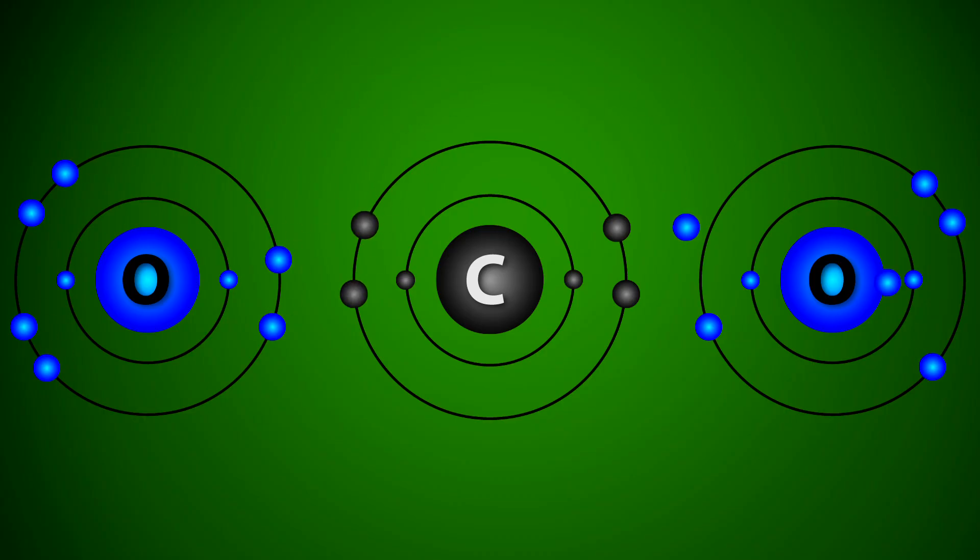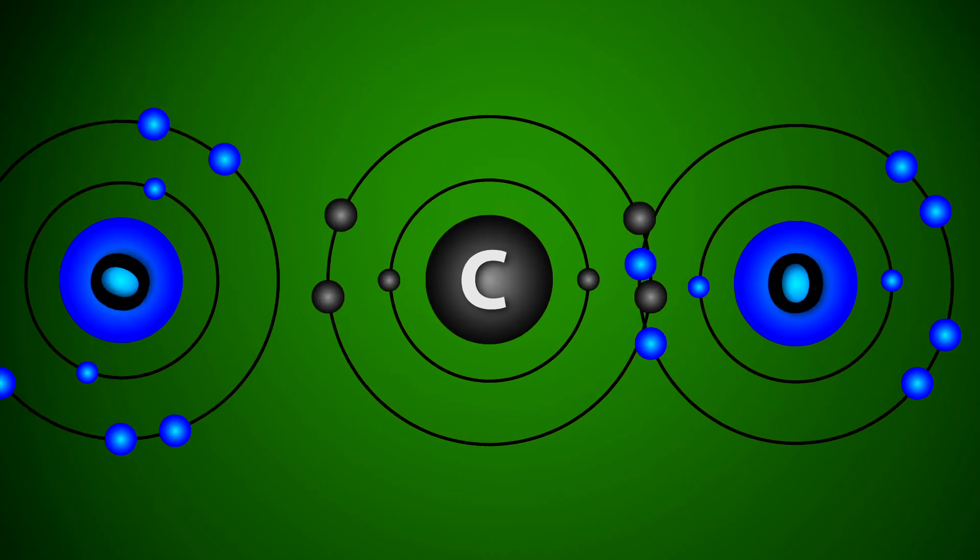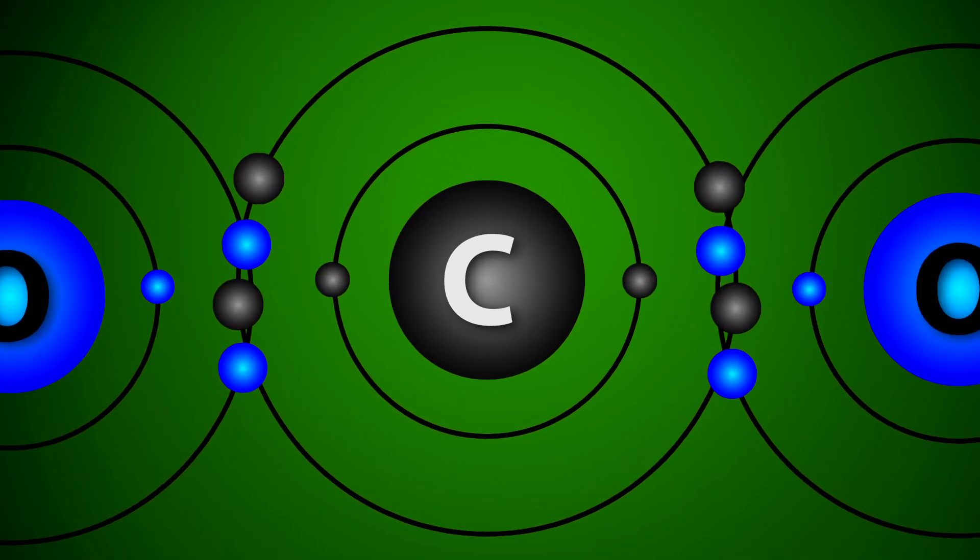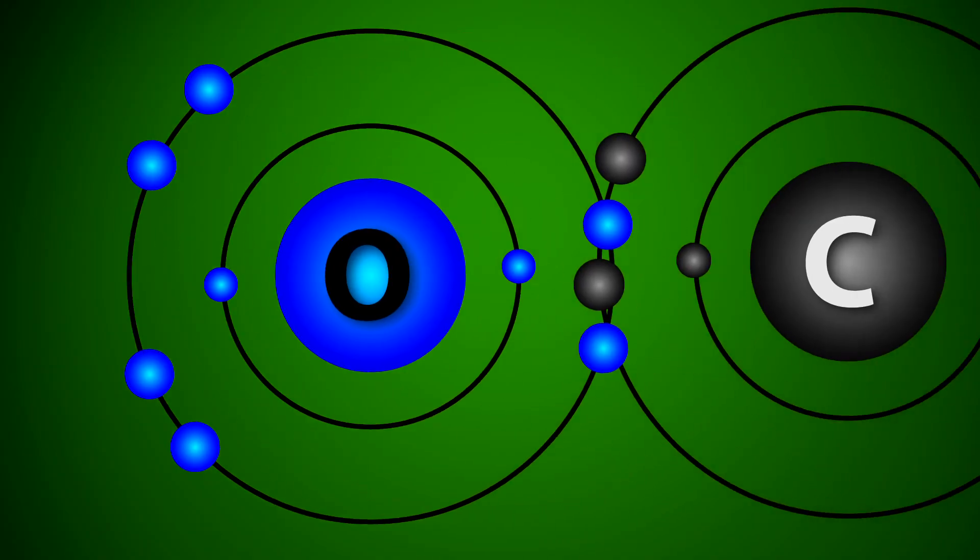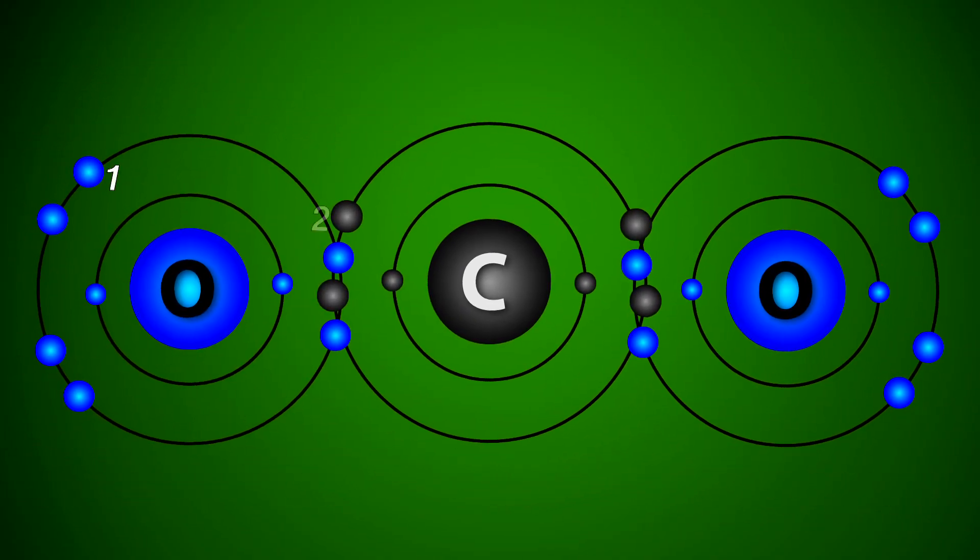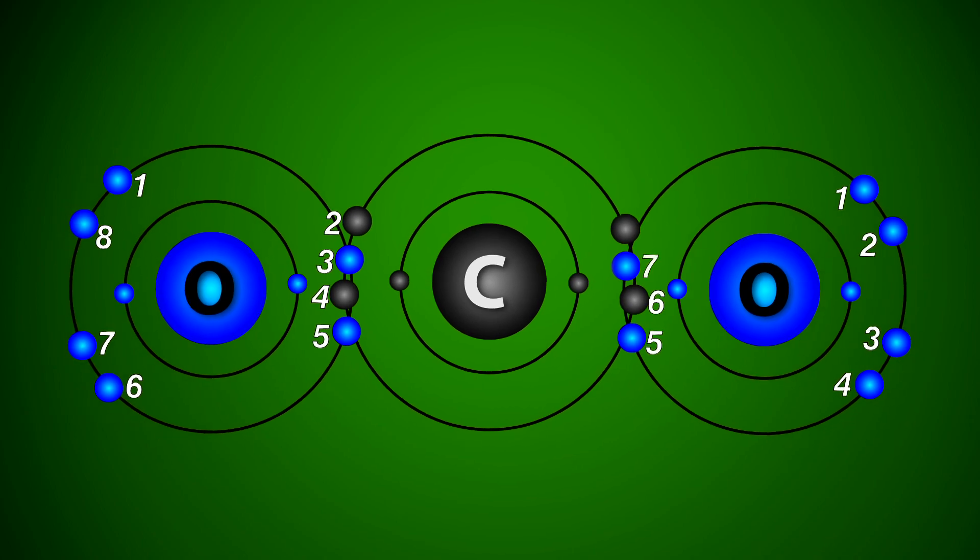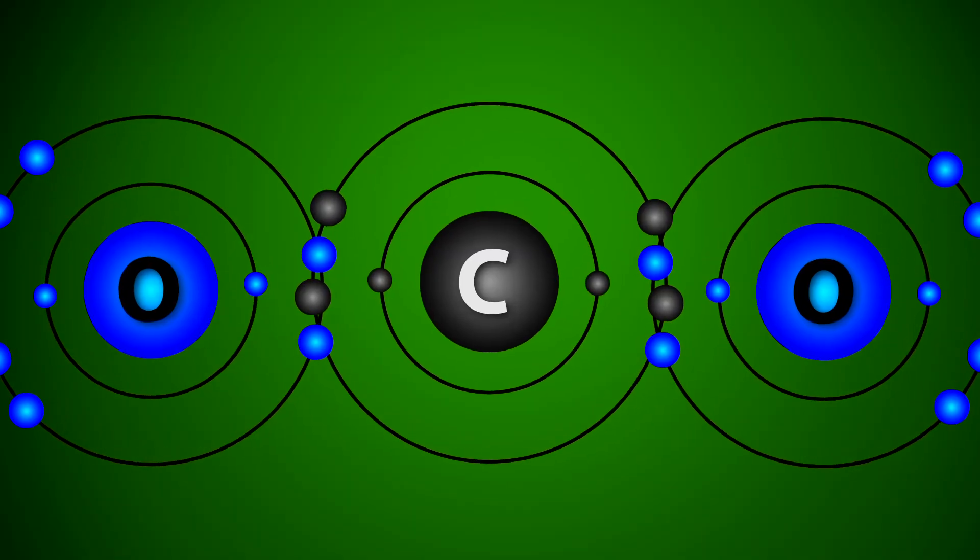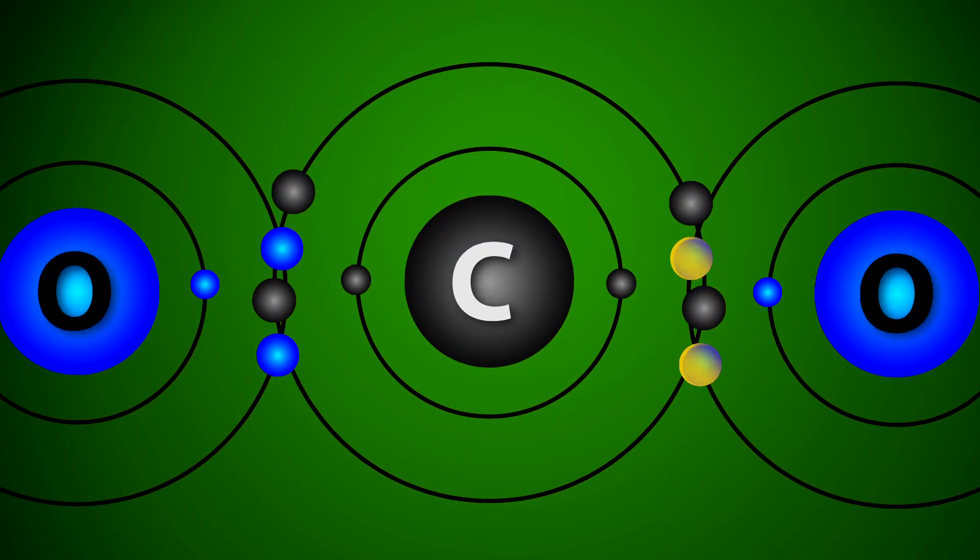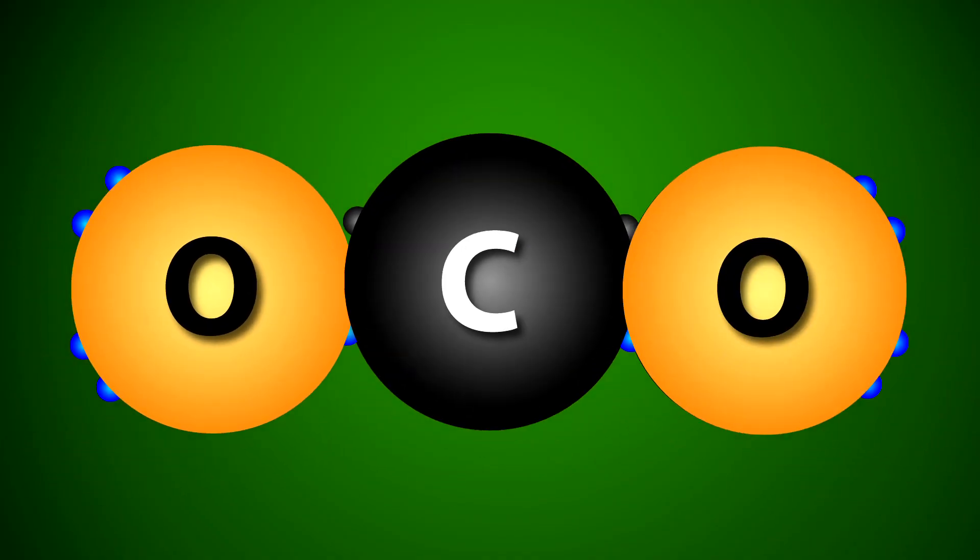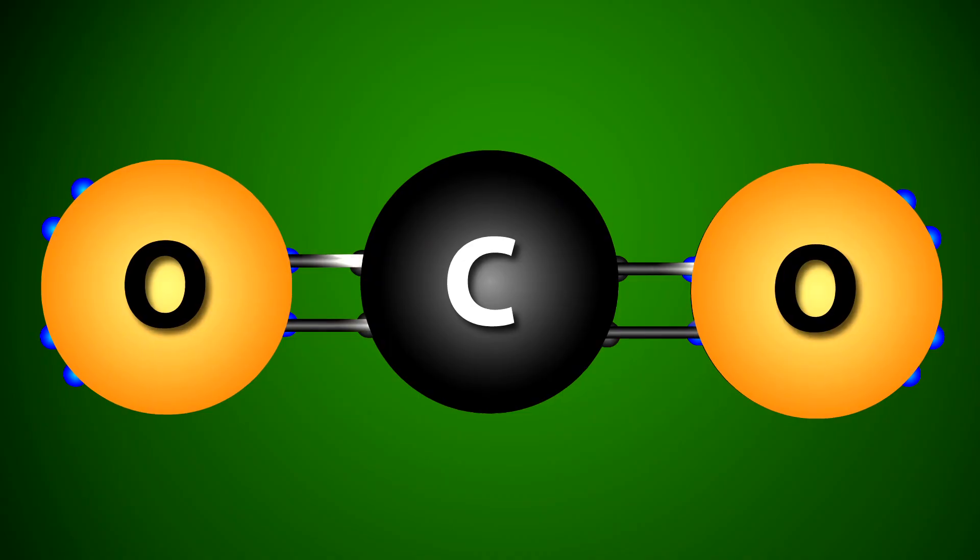The atoms align in specific ways to trade or share electrons so they can get the electron sets of eight they need. Two oxygen atoms connect to opposite sides of one carbon atom, which gives each the two electrons it needs to make eight. See? The carbon atom in the middle gets two electrons from the oxygen atom on one side and two from the one on the other, for a total of eight in its outer, or valence, shell. Sharing of pairs of electrons is called covalent bonding.